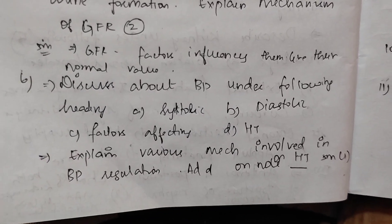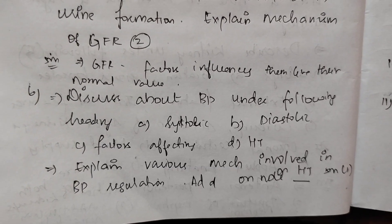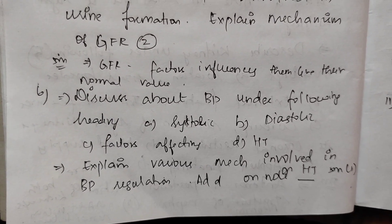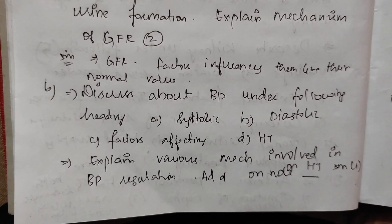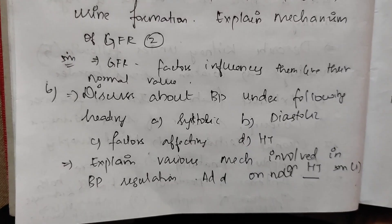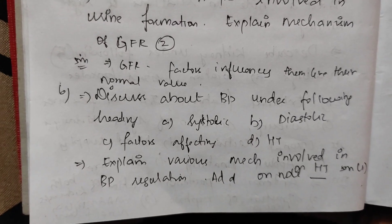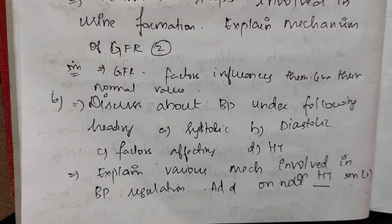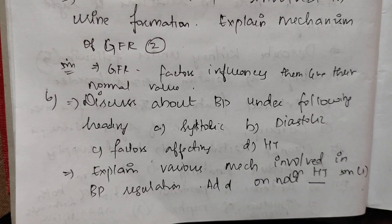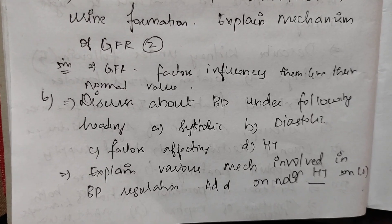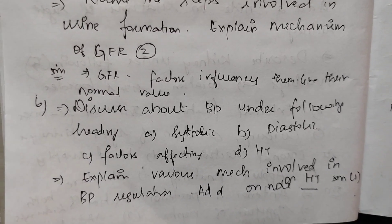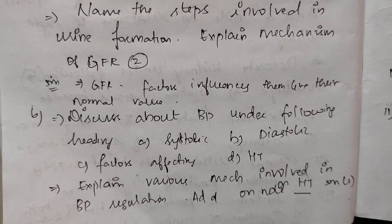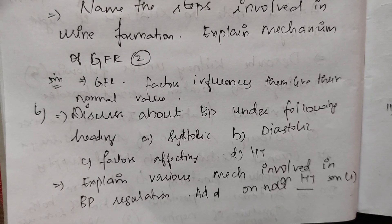Next, discuss blood pressure under the following headings: systolic, diastolic, factors affecting, and hypertension. Then, explain the various mechanisms involved in blood pressure regulation and add a note on hypertension. For 5 marks, there is a hypertension topic.